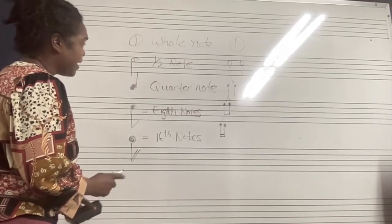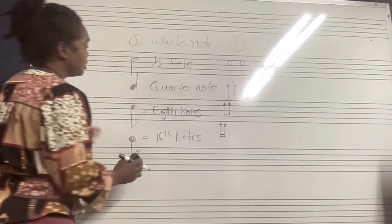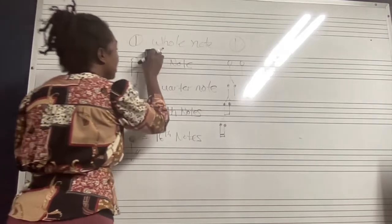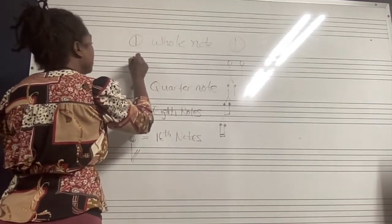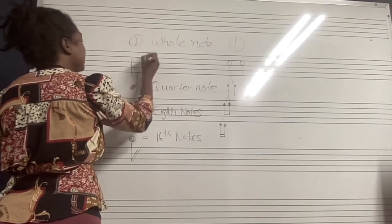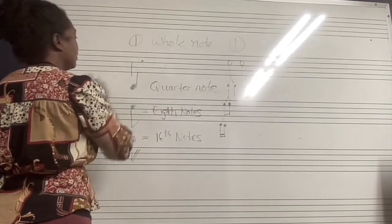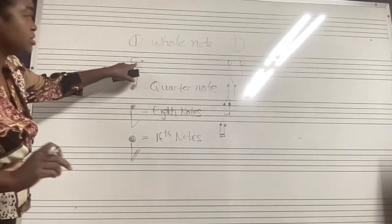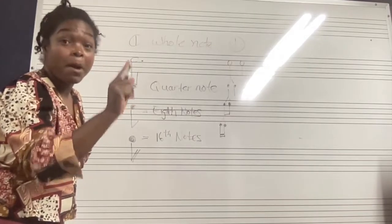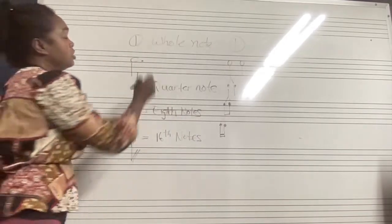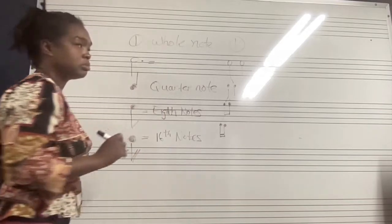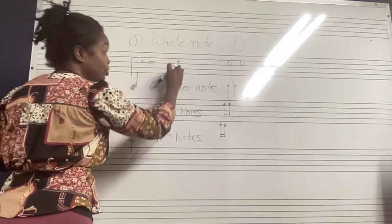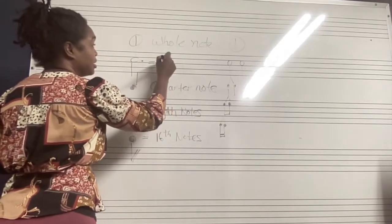If I add a dot onto this half note, the dot gives us one half more. So if the half note in 4/4 time is like one, two, it's like one, two, right?